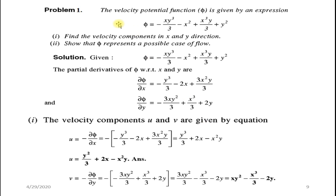Problem 1: The velocity potential function is given by φ = −xy³/3 − x² + x³y/3 + y². Find the velocity components in x and y directions, and prove phi represents a possible case of flow. From the definition, u = −∂φ/∂x and v = −∂φ/∂y. First, find ∂φ/∂x = −y³/3 − 2x + 3x²y/3 and ∂φ/∂y = −xy² + x³/3 + 2y.